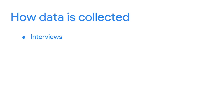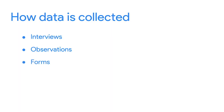Scientists also generate data. They use a lot of observations in their work. For example, they might collect data by studying animal behavior or looking at bacteria under a microscope. Earlier, we talked about the forms that the U.S. Census Bureau uses to collect data. Forms, questionnaires, and surveys are commonly used ways to collect and generate data.